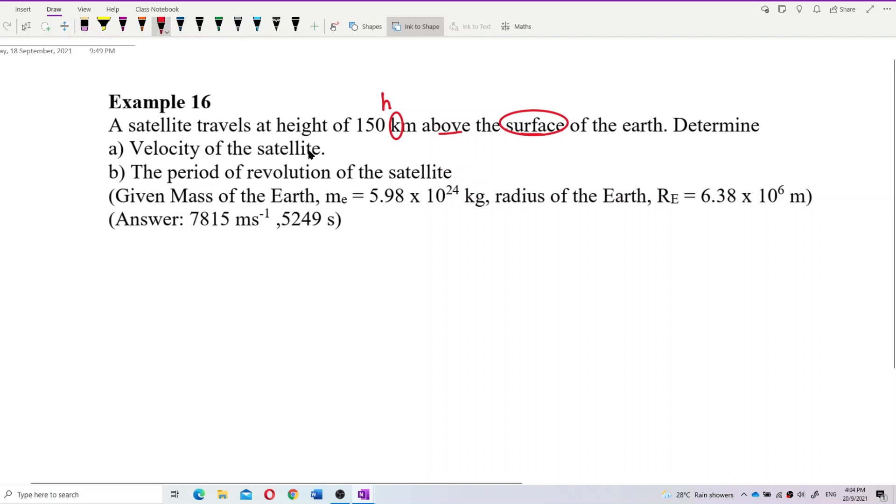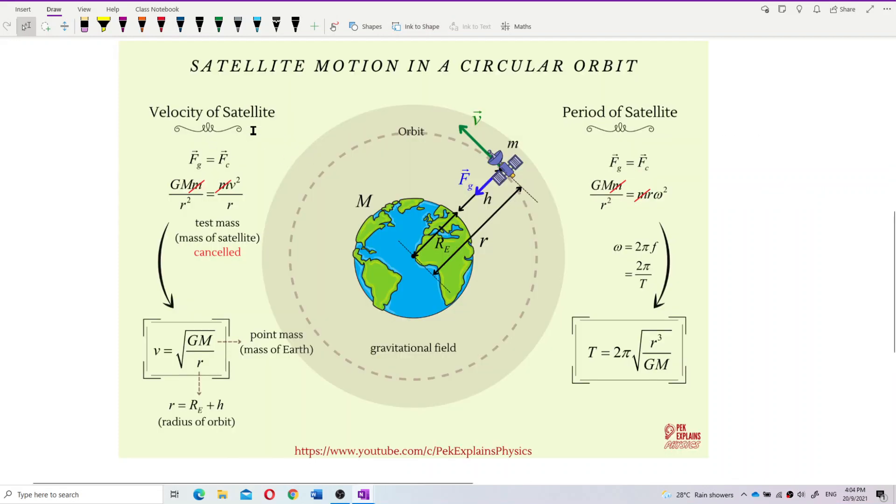We need to find velocity of satellite. What's the formula? Using the centripetal force equal to gravitational force, Fg equal to Fc. So the formula will become v equal to square root GM over r, where m is the point mass, the mass of Earth, not the satellite mass.